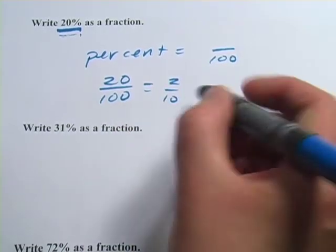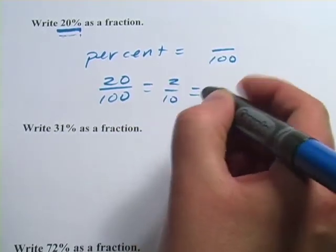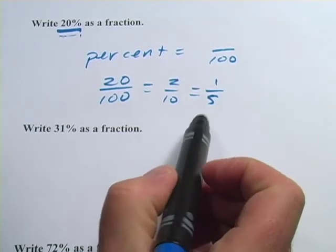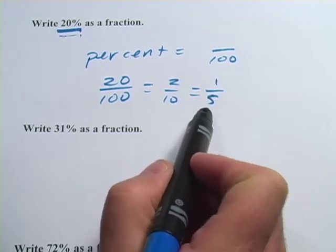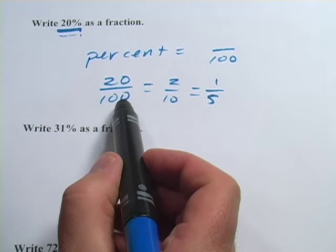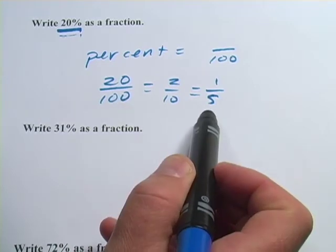I could divide the top and the bottom by 2. 2 divided by 2 is 1. 10 divided by 2 is 5. 1 fifth. Now, it's reduced to its simplest form. That's 20% as a fraction. We start with the number over 100 and then reduce it if we need to.